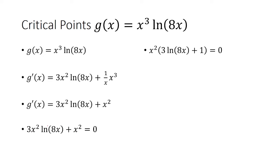Now they both have a factor of x² so we can factor that out, and we can set x² = 0 to get x = 0. And then we have to set 3ln(8x) + 1 = 0 to get ln(8x) = -1/3.